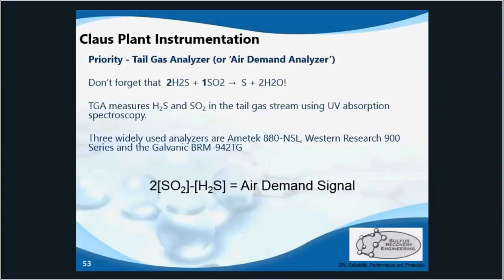We'll start with probably the most important piece of instrumentation in the SRU — the tail gas analyzer, also called the air demand analyzer. What it does is measure the H2S and SO2 content in the tail gas stream, and it does that with ultraviolet spectroscopy.